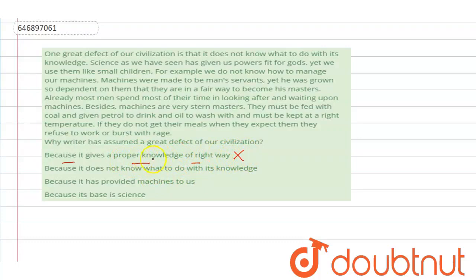Nowhere in the passage has it been mentioned that it gives a proper knowledge of right way. Second is because it does not know what to do with its knowledge. C is because it has provided machines to us.